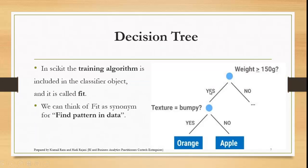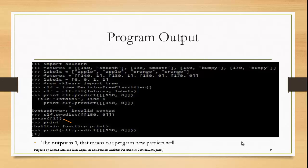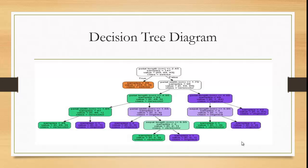I'll show how it works in the form of a diagram. When the weight is 150g it could be an orange or an apple, but when the texture is bumpy it is definitely going to be an orange, and if it is not bumpy it is an apple. This is how the decision tree is working.